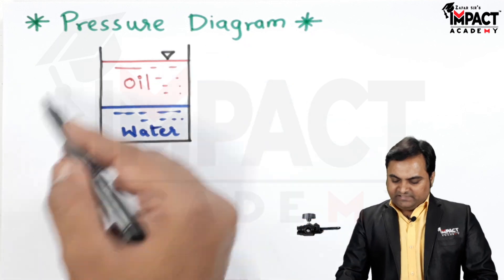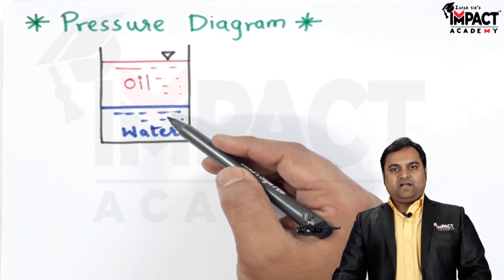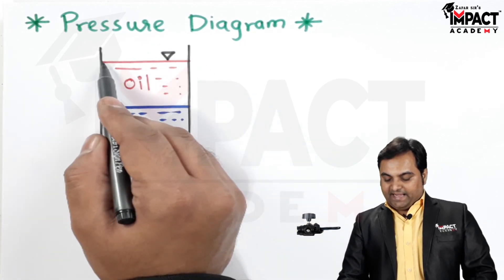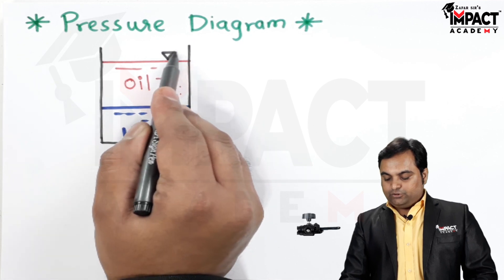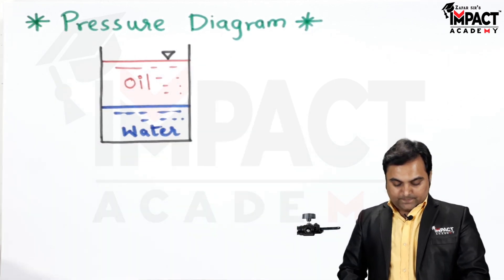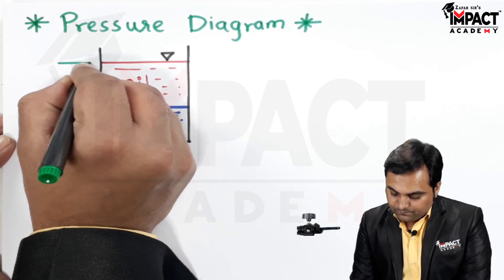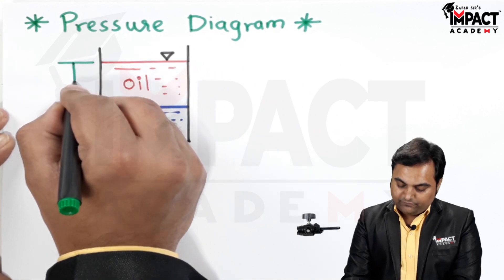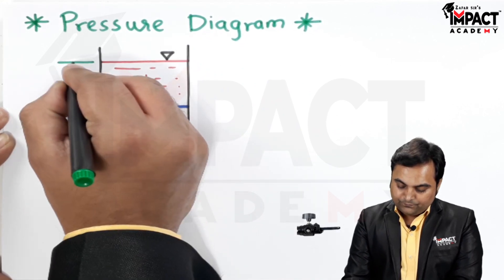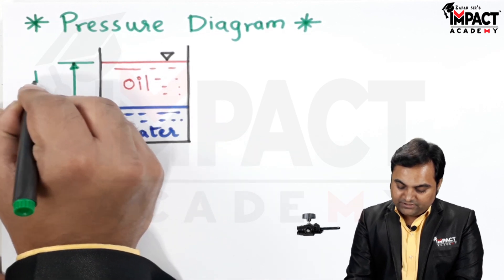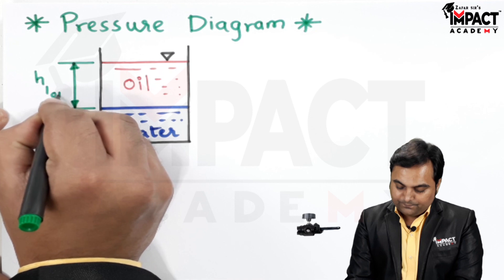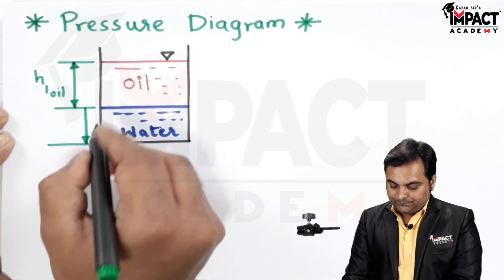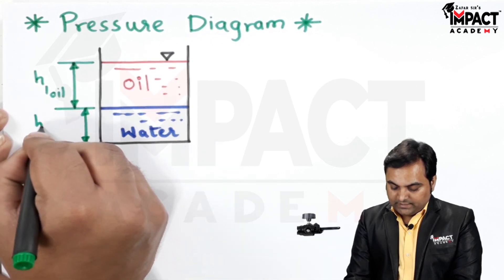Here we have a tank in which there are two different liquids. I have taken an example where there is water and over that there is oil. It is an open tank and the surface of the oil is subjected to atmospheric pressure. The height of the oil column is denoted as h suffix oil, and similarly we have the height of water column h suffix water.